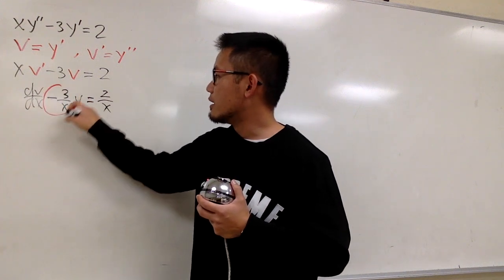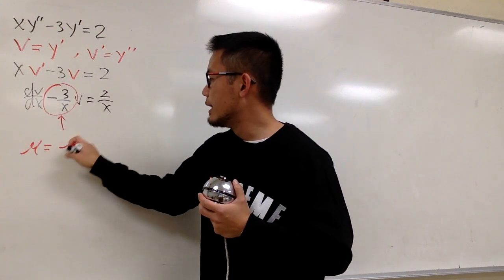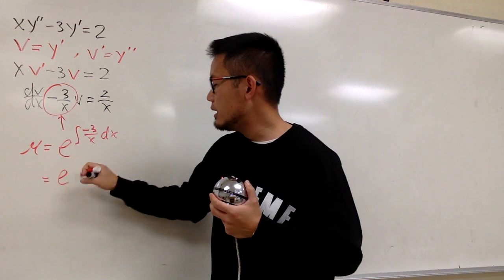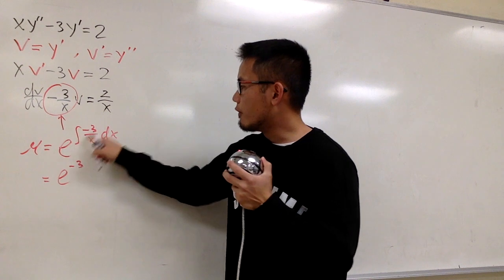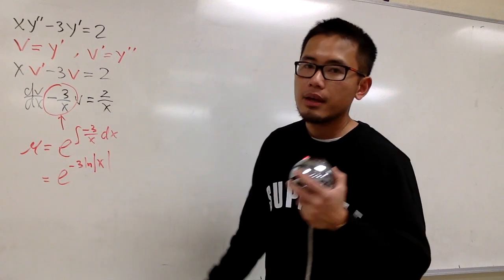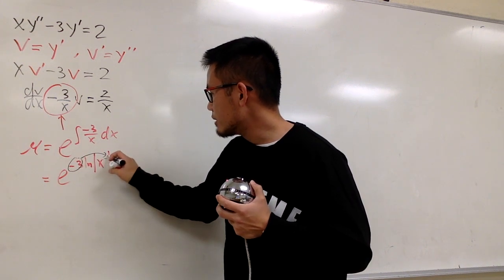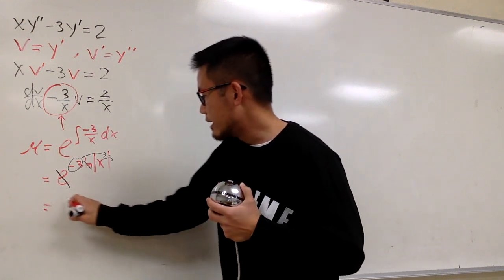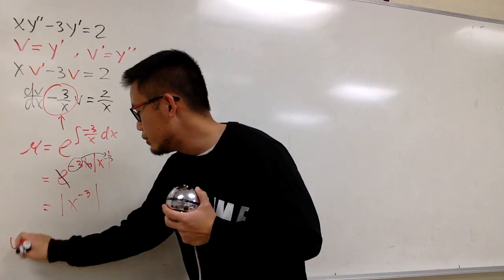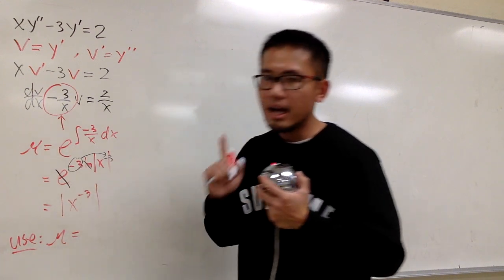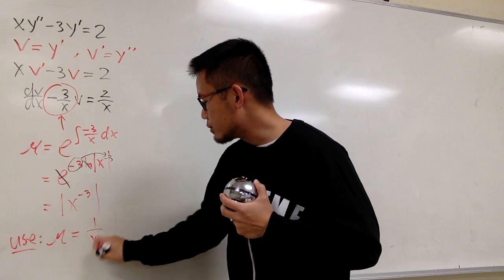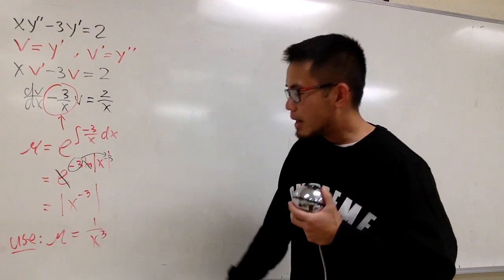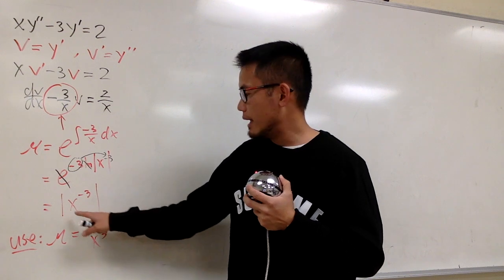For the integrating factor, I'm going to use mu, which equals e to the integral of negative 3 over x dx. That gives e to the power of negative 3 times ln of the absolute value of x. You can take that and make it into a power — negative 3 — so that the e and the ln cancel. This gives mu equal to the absolute value of x to the negative 3, but I'll just use the positive version, which is 1 over x to the third power.